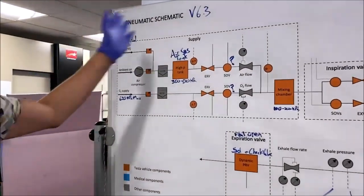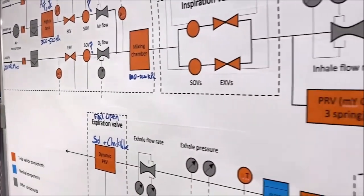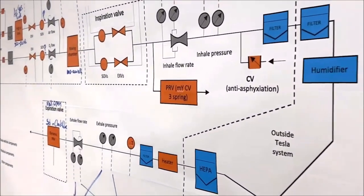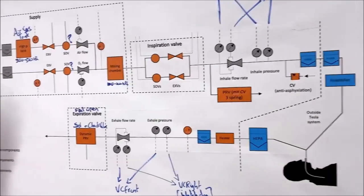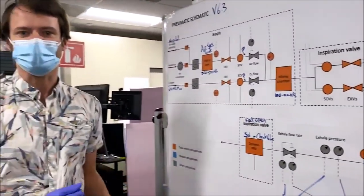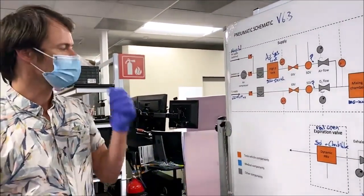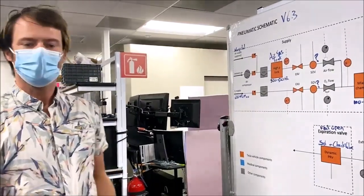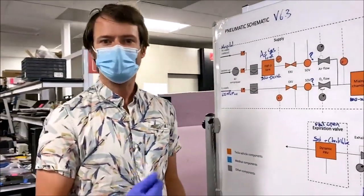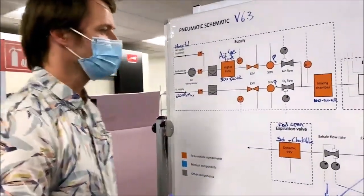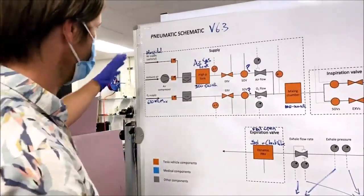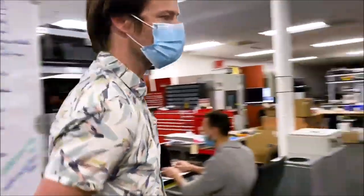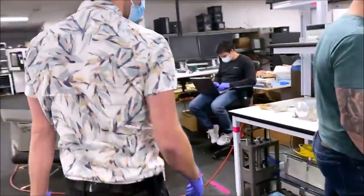Here's our high-level schematic design. You can see that all the red parts here are Tesla vehicle parts, so we've used a lot of those. What is a ventilator? A ventilator is a device that helps patients breathe who can't breathe well for themselves. It does that by forcing air into their lungs with a pressure or volume control, and then they exhale passively.